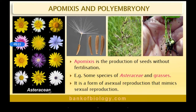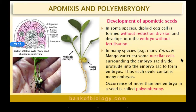Examples of apomixis are found in Asteraceae and grasses. In some species, a diploid egg cell is formed without reduction division and develops into the embryo without fertilization. In many other species, nucellar cells divide and form embryos, entering into the embryo sac and forming the embryo.